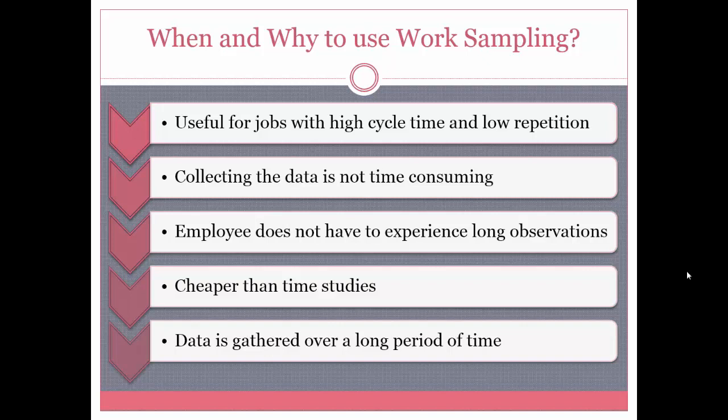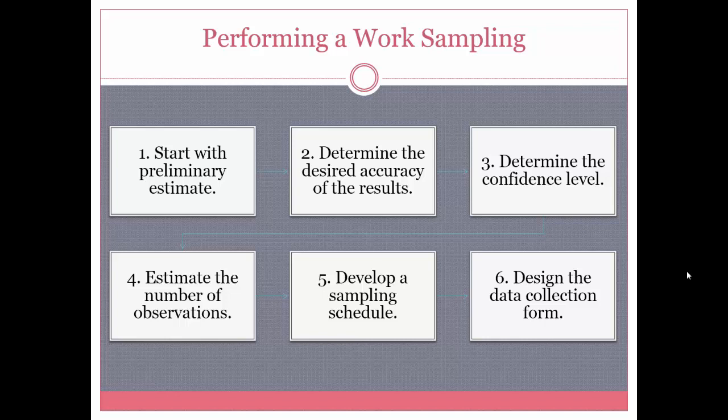There are six main steps to preparing and performing a work sampling study. First, start with a preliminary estimate, using historical data or an educated guess. Second, determine the desired accuracy of the results. Third, determine the confidence level — 90% or 95% — which will determine how much sampling needs to be done. Fourth, estimate the number of observations expected to take place for each task.